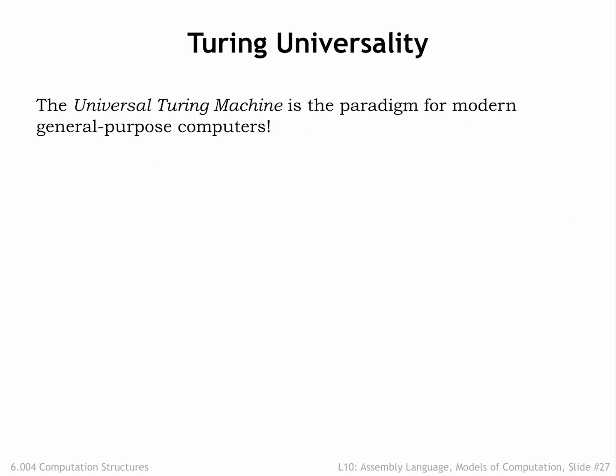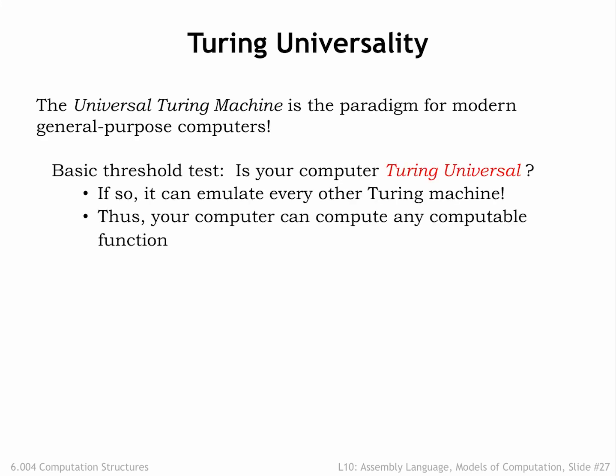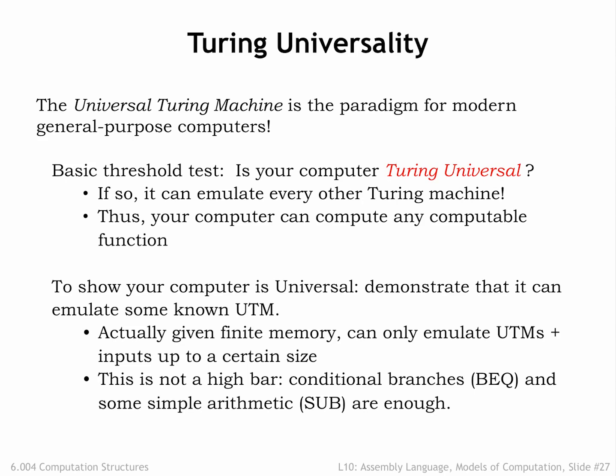The notion of interpreting a coded representation of a computation is a key idea and forms the basis for our stored program computer. The universal Turing machine is the paradigm for modern general-purpose computers. Given an ISA, we want to know if it's equivalent to a universal Turing machine. If so, it can emulate every other Turing machine and hence compute any computable function. Simply demonstrate that it can emulate some known universal Turing machine. The finite memory on actual computers will mean we can only emulate universal Turing machine operations on inputs up to a certain size, but within this limitation we can show our computer can perform any computation that fits into memory.